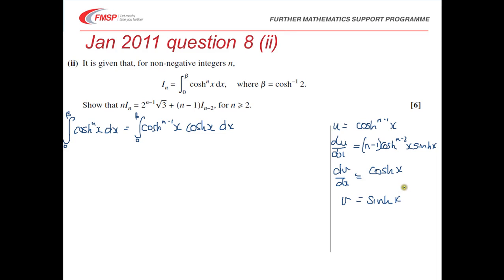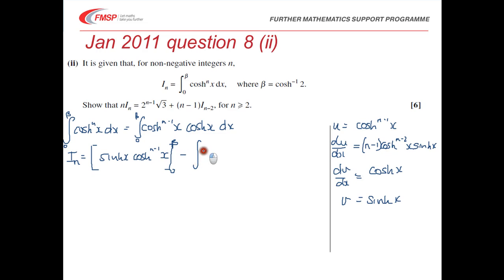Substituting into the integration by parts formula, I(n) equals [sinh x · cosh to the n minus 1 of x] evaluated from 0 to beta, minus the integral from 0 to beta of sinh x times (n minus 1) cosh to the n minus 2 of x times sinh x dx.